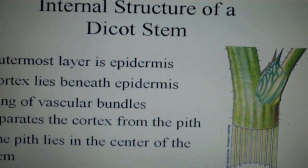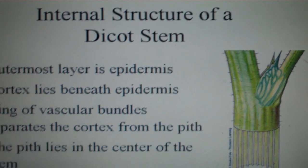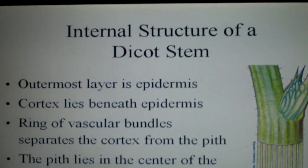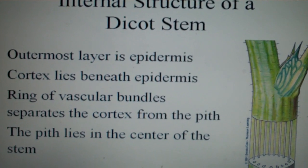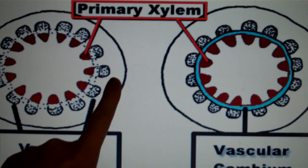In a dicot plant, the outermost layer of the stem is the epidermis, which is the part you would see. Right below the epidermis is the cortex. Here's the cortex right below the epidermis.